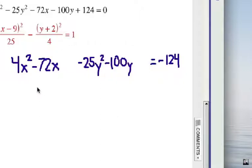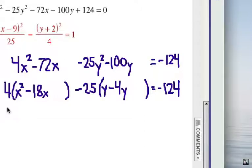Let's look for a common factor. So 4 out of the x group and negative 25 out of the y group. Now remember, in the hyperbola formula, we want to make sure we have a subtraction between the x group on the left and the y group right here.